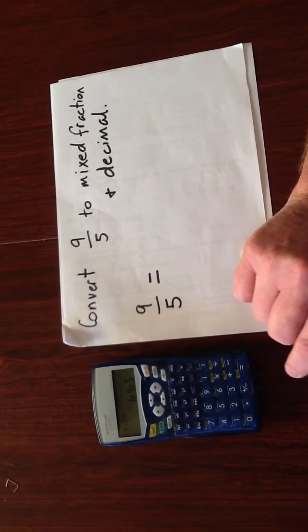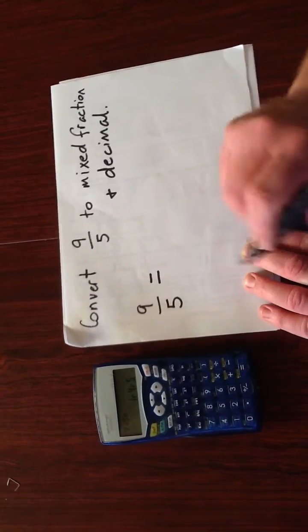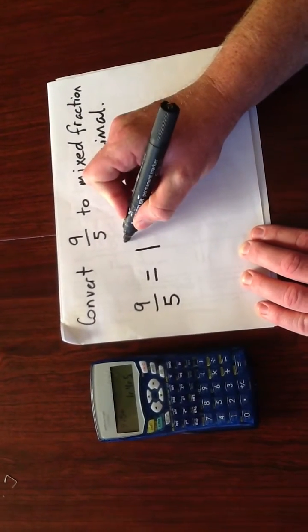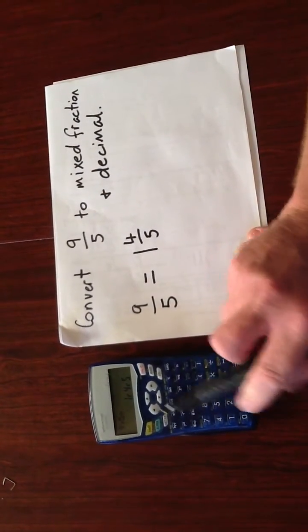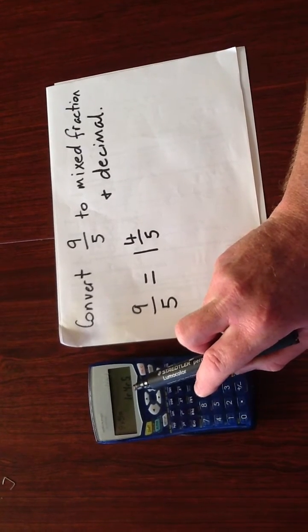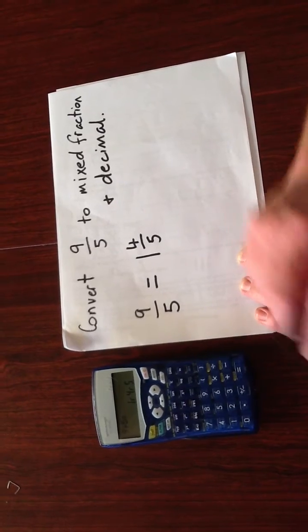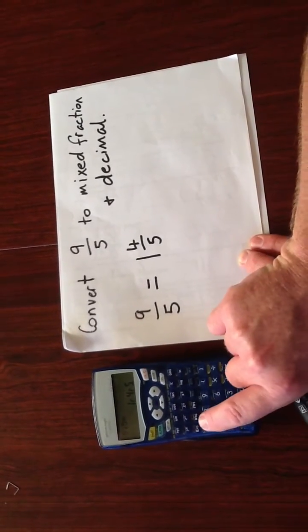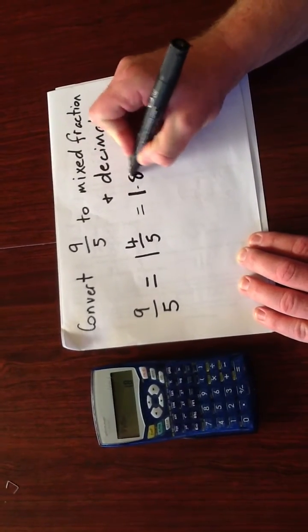Press equals and you'll see that it automatically converts to a mixed fraction, 1 and 4 over 5. So we need to see how to read that on the calculator, it's 1 and 4 over 5. To convert to a decimal, just press the same button again and we see that it is 1.8.